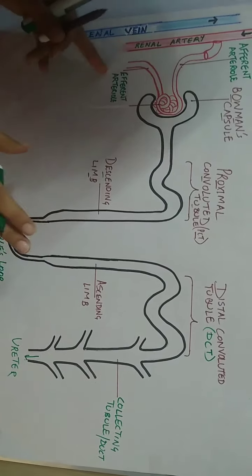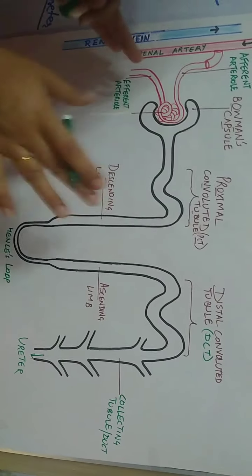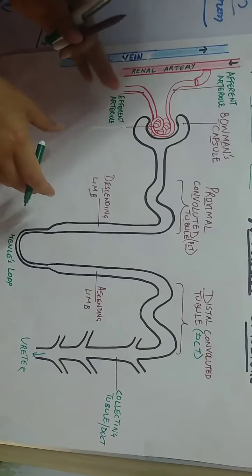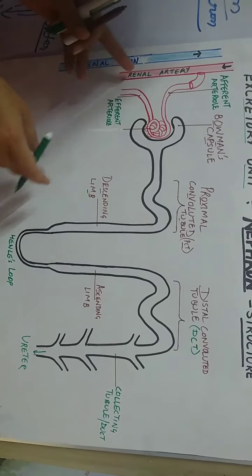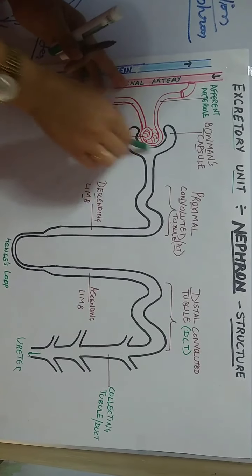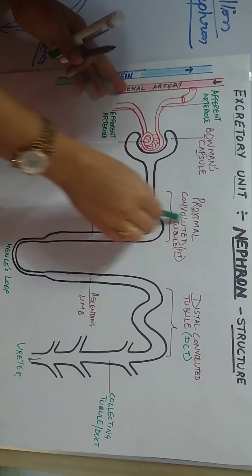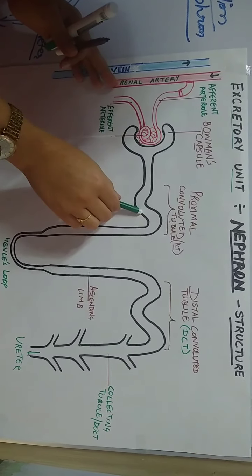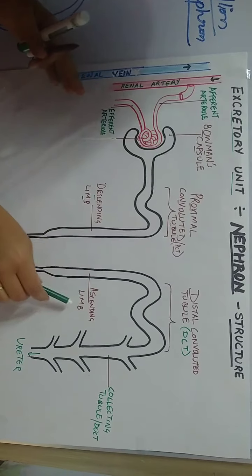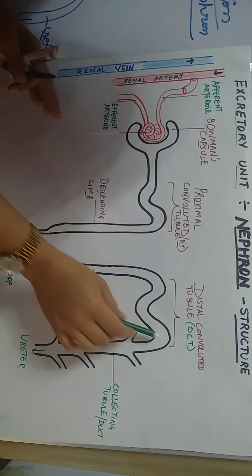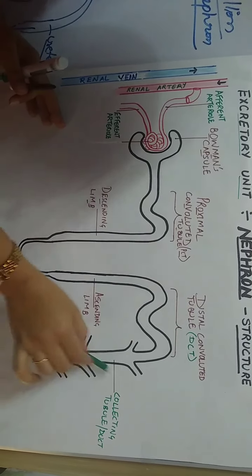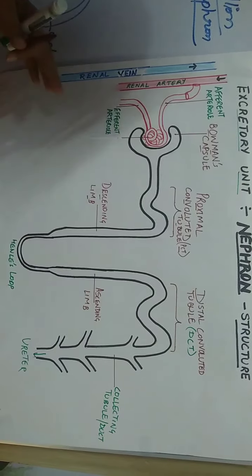You have to learn these common and important parts of the nephron: the Bowman's capsule (cup-shaped), the proximal convoluted tubule, the descending limb, the ascending limb, the distal convoluted tubule, and the collecting tubule or duct.